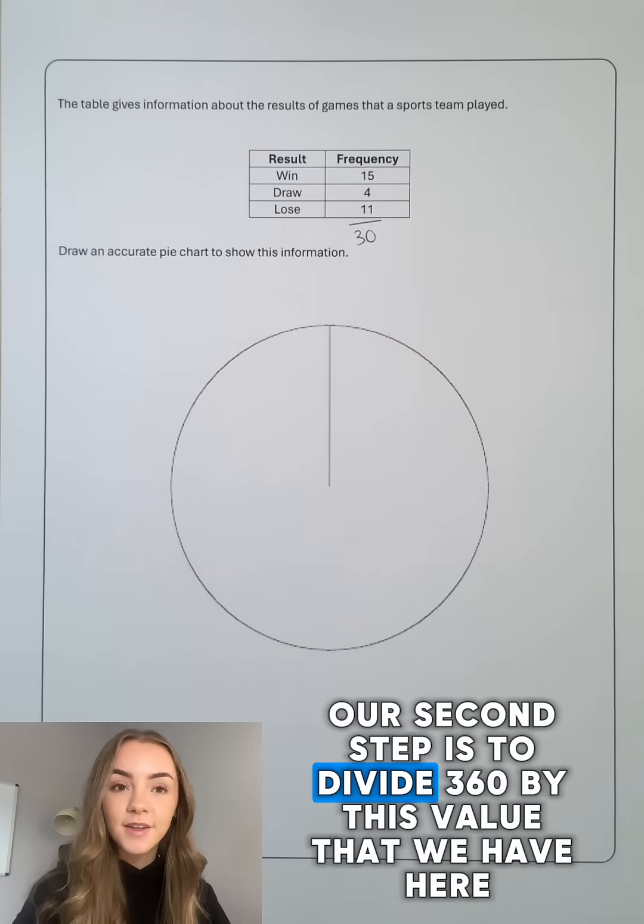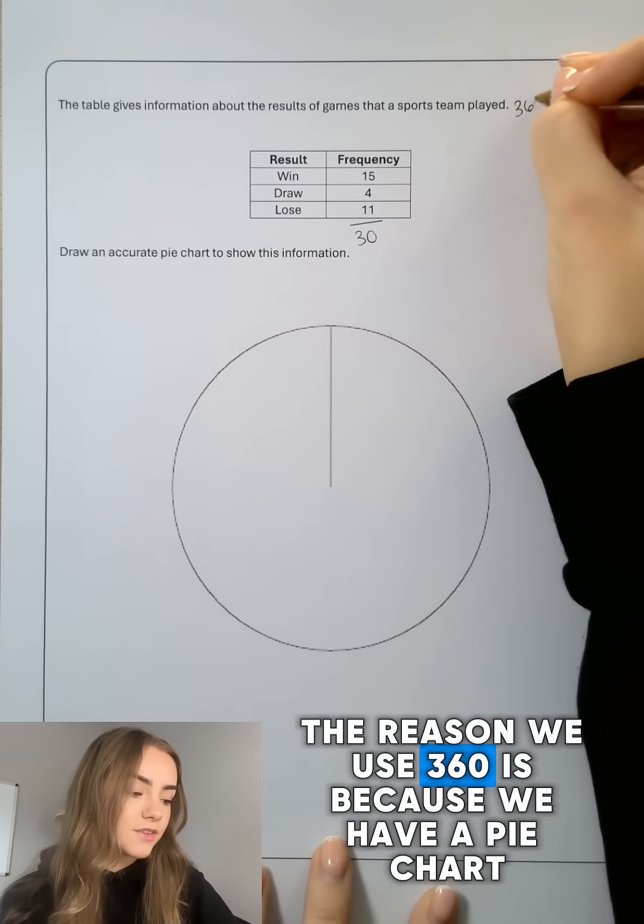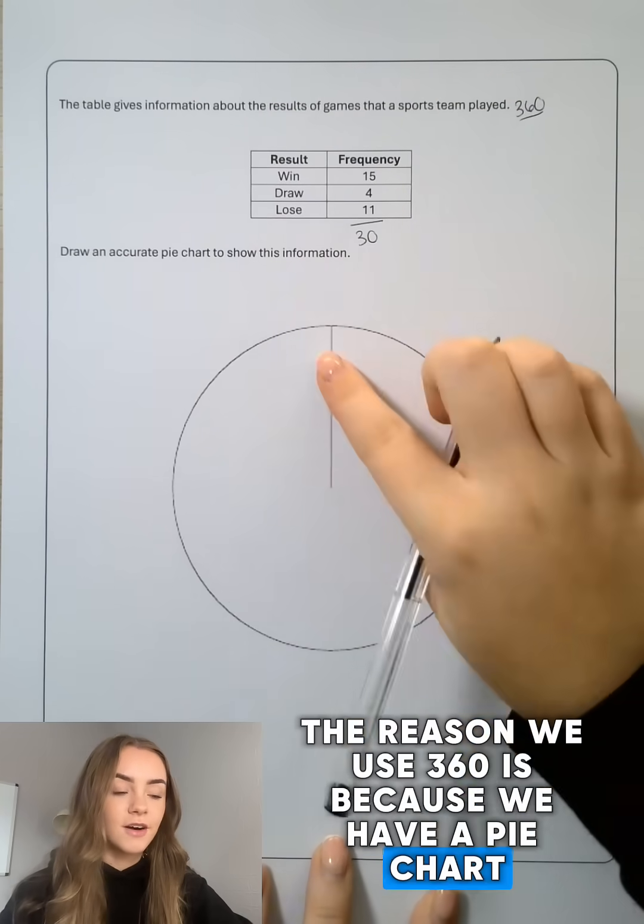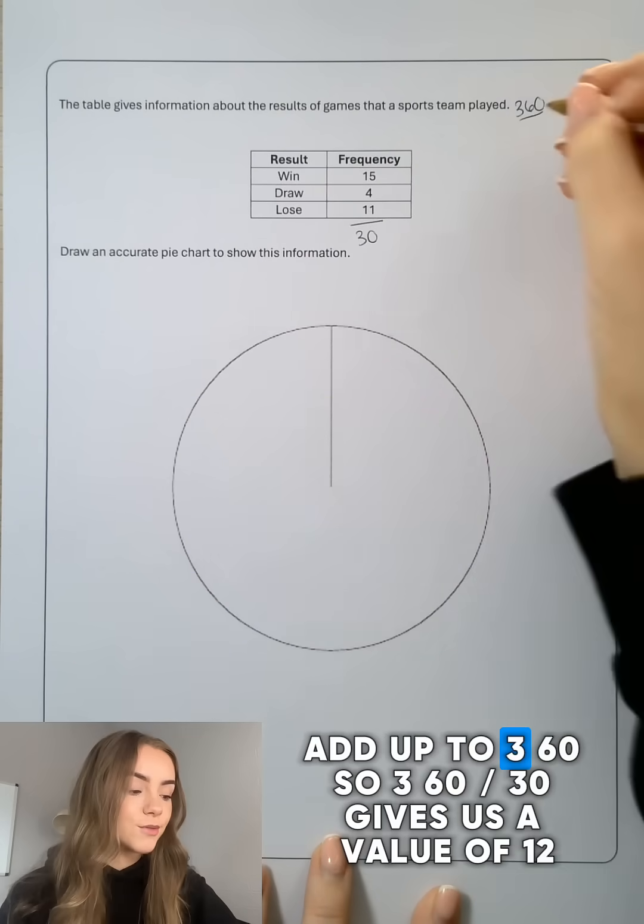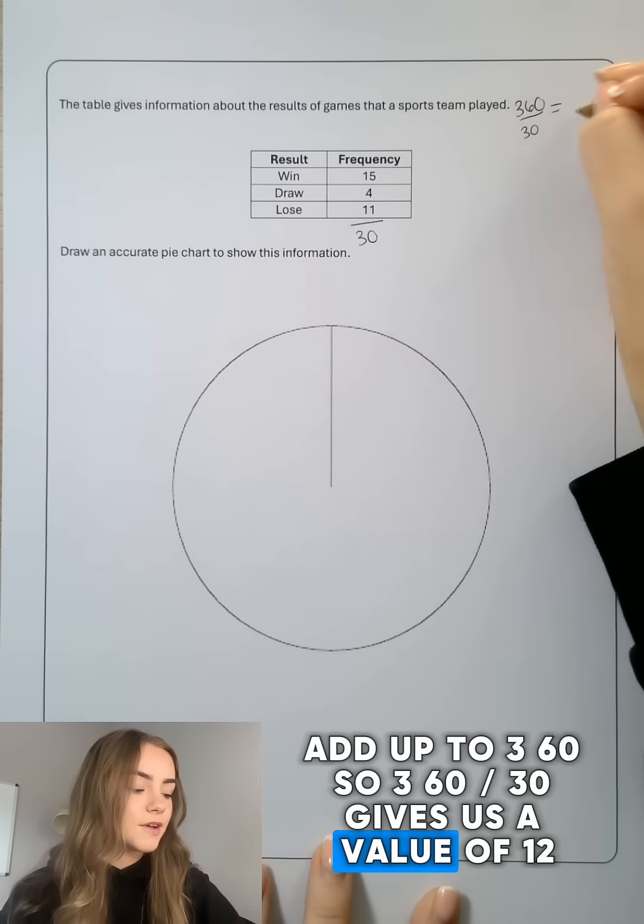Our second step is to divide 360 by this value that we have here. The reason we use 360 is because we have a pie chart with angles around a point that add up to 360. So 360 divided by 30 gives us a value of 12.